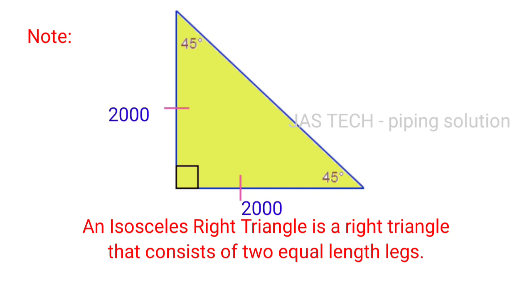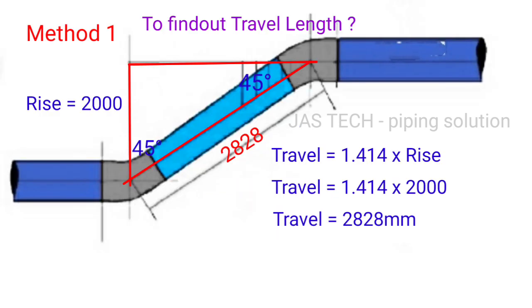Method 1 to find out travel length: Travel length formula is equal to 1.414 times rise height. We know rise height is 2000 mm. So travel equals 1.414 times 2000. The answer is 2828 mm. That is the travel length. Note: this travel formula is only for 45 degree angle.